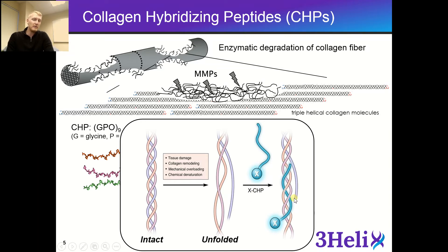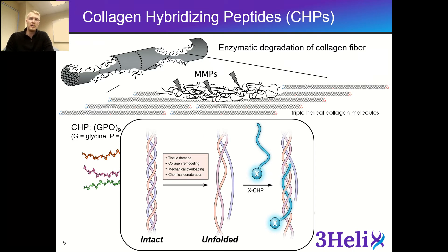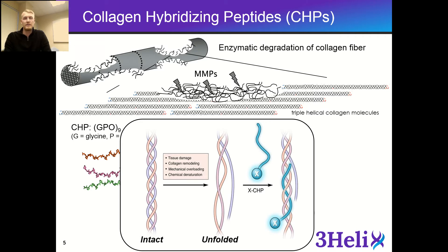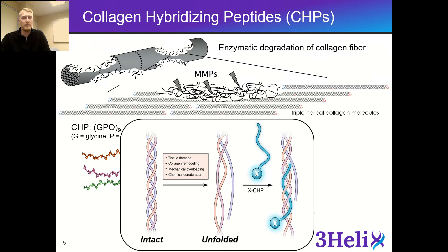This method is similar to the way that DNA primers bind to DNA during PCR. Because the collagen sequence is preserved throughout the collagen types, throughout species, and throughout tissue types, our CHP can actually target the entire collagen family regardless of the species and regardless of the tissue type.